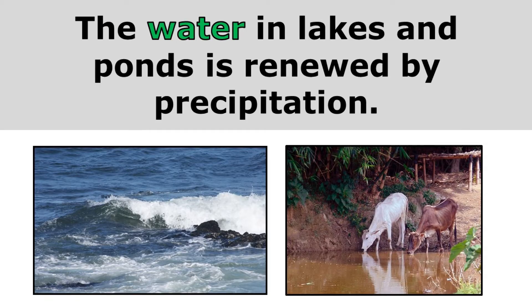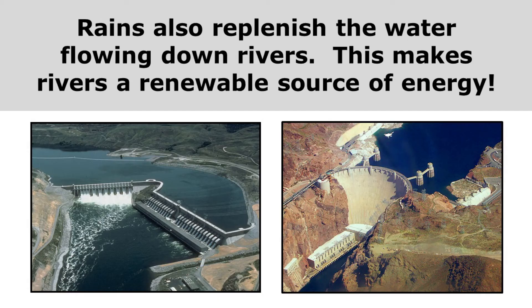The water in lakes and ponds is renewed by precipitation — the rain replaces the water that's been used. Rain also replenishes the water flowing down rivers, which makes rivers a renewable source of energy.